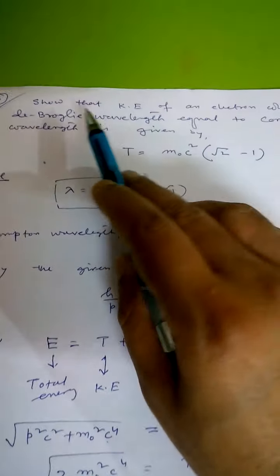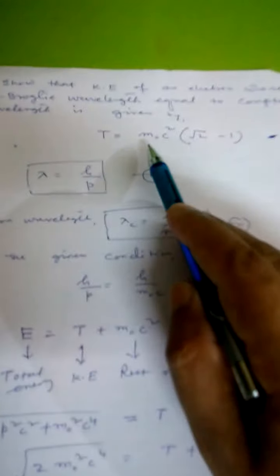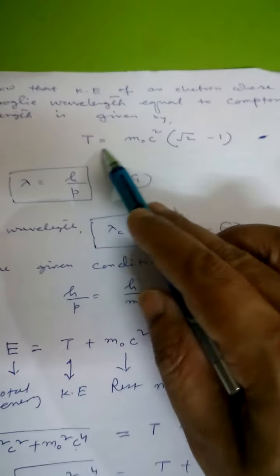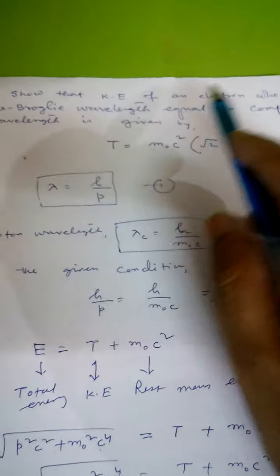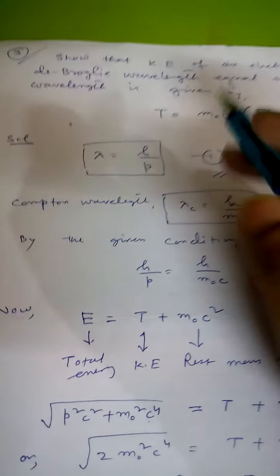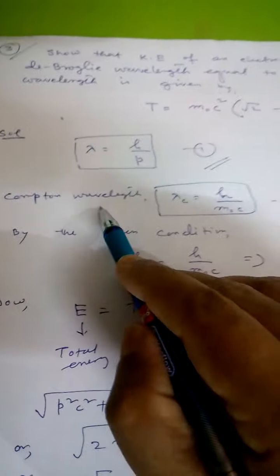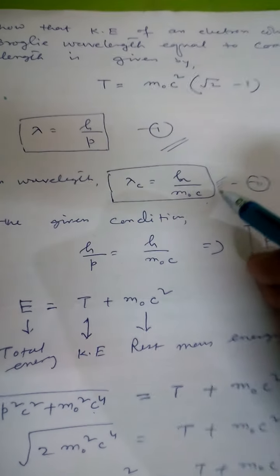Now consider the third problem: show that the kinetic energy of an electron whose de Broglie wavelength equals its Compton wavelength is given by T = m₀c²(sqrt(2) - 1). The given condition is: de Broglie wavelength equals Compton wavelength. The de Broglie wavelength is lambda = h/P, and the Compton wavelength is lambda_c = h/(m₀c). From these two expressions, P = m₀c.